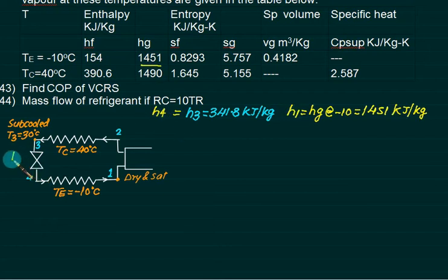H3 is same as H4 because the process is iso-enthalpic. So out of 4 points, I already know the enthalpy of 3 points. Only 1 point is less. From process 1 to 2, it is isentropic.